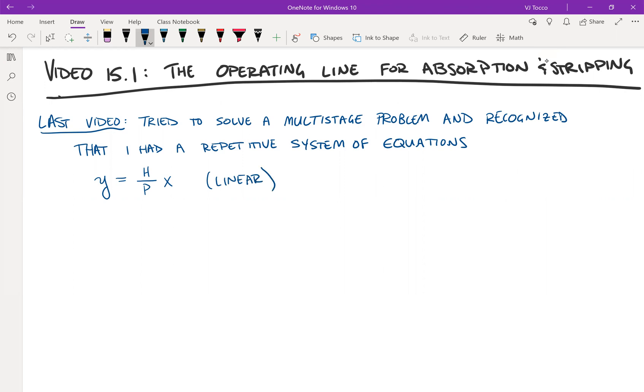Remember that the two lines that I drew for distillation are the equilibrium data and the operating line. It's going to be the same thing for absorption stripping. This is going to be the equilibrium data.